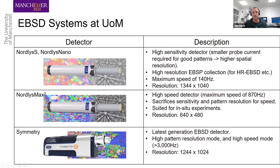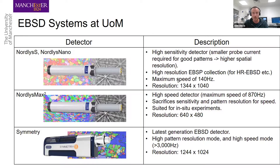Here is a list of all the equipment we use at the University of Manchester. All of our equipment is produced by Oxford Instruments, so a lot of the software-based work today will be based around their software and systems. We have three different sets of detectors: the older CCD cameras — the Nautilus S and Nautilus Nano — on microscopes such as the Sirian and Qantas 650. These are high sensitivity detectors with good spatial resolution, a maximum speed of 140 Hz, and a resolution of 1344 by 1040.